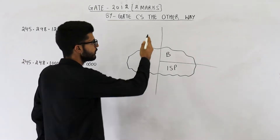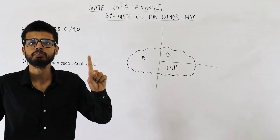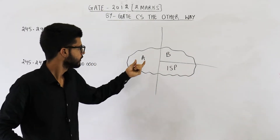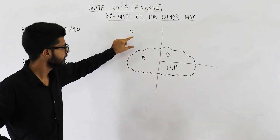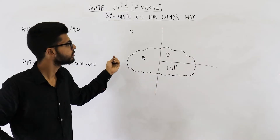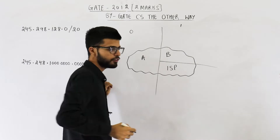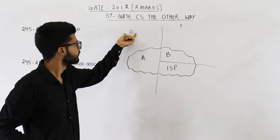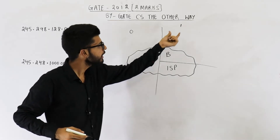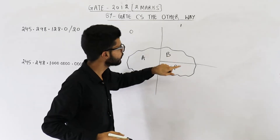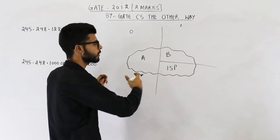Step one: we will divide the original network into two subnets — that can be done by fixing one bit. Suppose the value of that bit for one half is zero. For this network the value of that bit can be zero, and for the other network the value of that bit can be one. If that bit is zero, we are talking about the subnet of organization A. If that bit is one, we are talking about the other half.